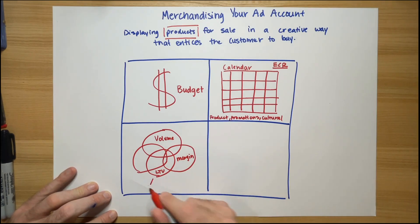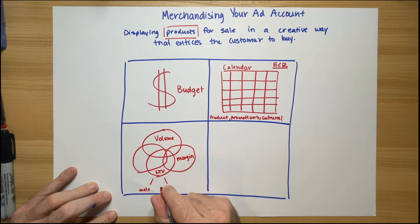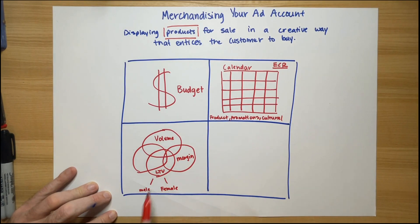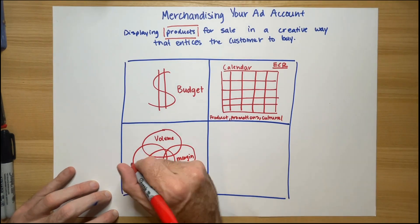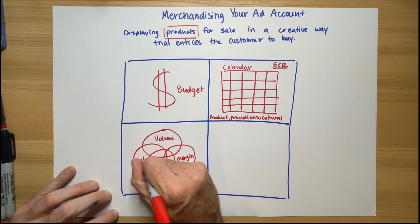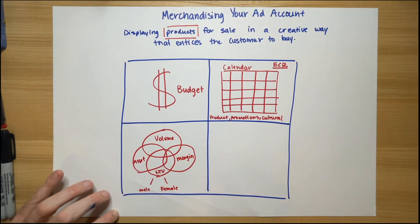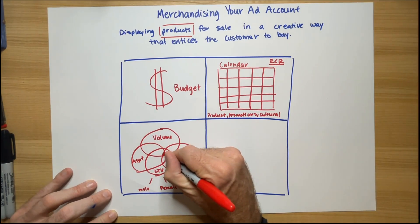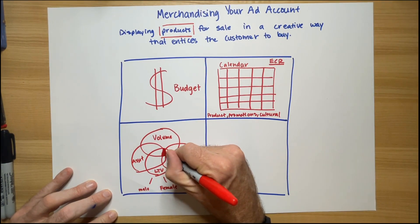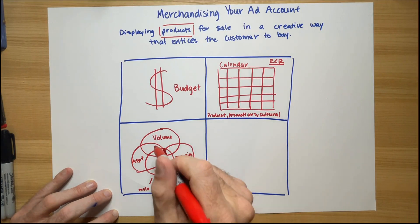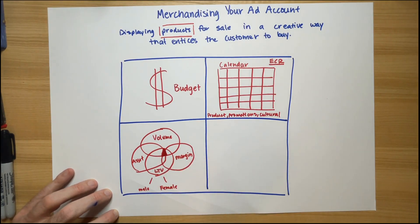An easy example here for many brands is the distinction between male products and female-focused products — especially in apparel — which produce major differences in lifetime value. And finally, a consideration for the asset library that you have to promote each product. At the center of these overlapping circles are the products and offers you want to focus on: your highest-volume SKUs with the best margin, the best LTV, and the best asset library. That's the third consideration.